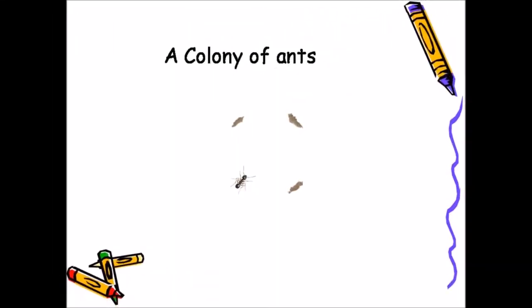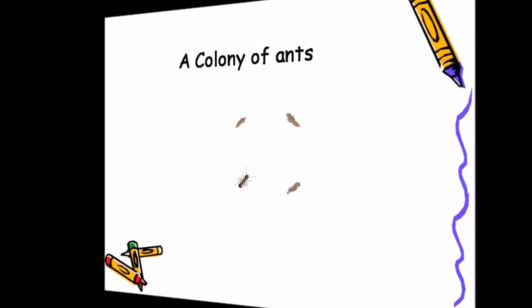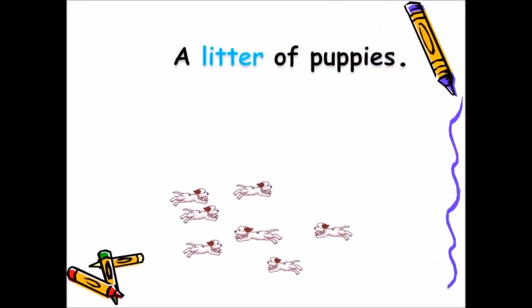A colony of ants — 'colony' is a collective noun, it refers to a group of ants. Next, here are some puppies. What is a group of puppies called? Yes, 'litter' — litter is a collective noun which refers to a group of puppies.